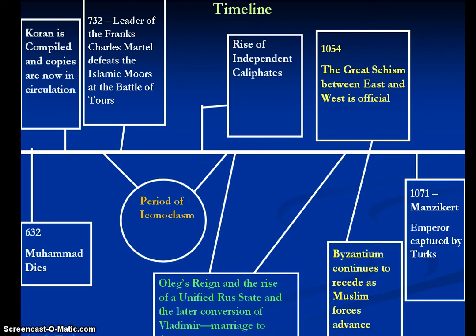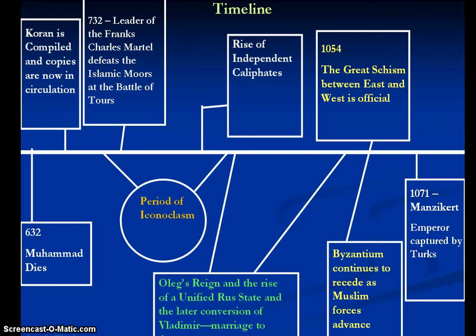The Byzantine Empire continues to get smaller and smaller — we call them almost in class the Incredible Shrinking Empire. And by 1071, at Manzikert, the emperor of the Byzantines is captured by Turkish Islamic invaders. You can start to see the framework for which Islam rises: Greek Orthodox is being challenged in the East, the Byzantine Empire is eventually going to collapse, and you see a new, strong, independent religion develop in the Arabian Peninsula and then start to expand rapidly.